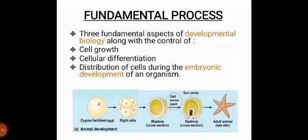The next point is the fundamental process — the basic process — which includes aspects of developmental biology, along with the control of: number one, cell growth, which refers to an increase in the total mass of cells including cytoplasmic, nuclear and organelle volume; and number two, cell differentiation, in which a cell changes from one cell type to another. Differentiation occurs numerous times during the development of a multicellular organism, as you can see in the diagram showing how a simple zygote or fertilized egg changes into a complex system of tissues and cell types.